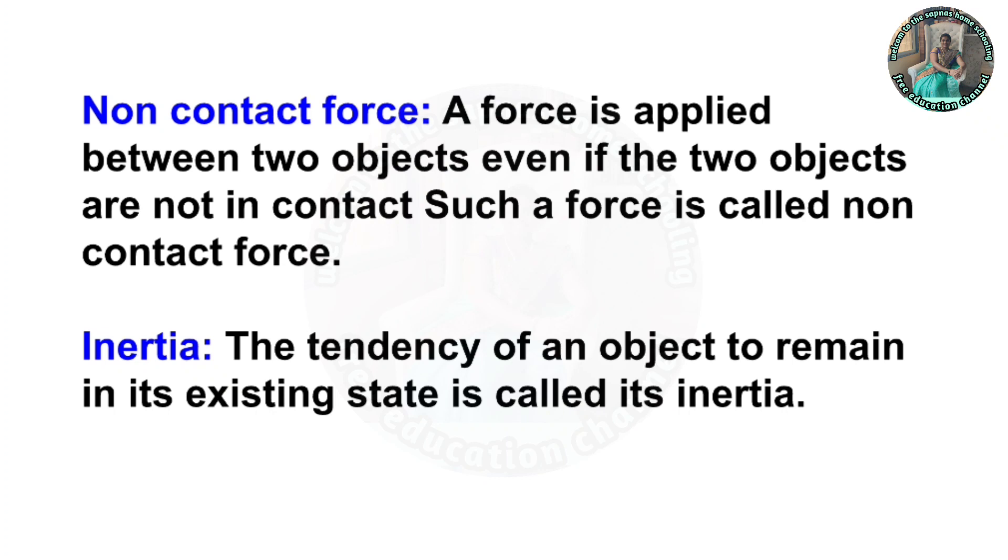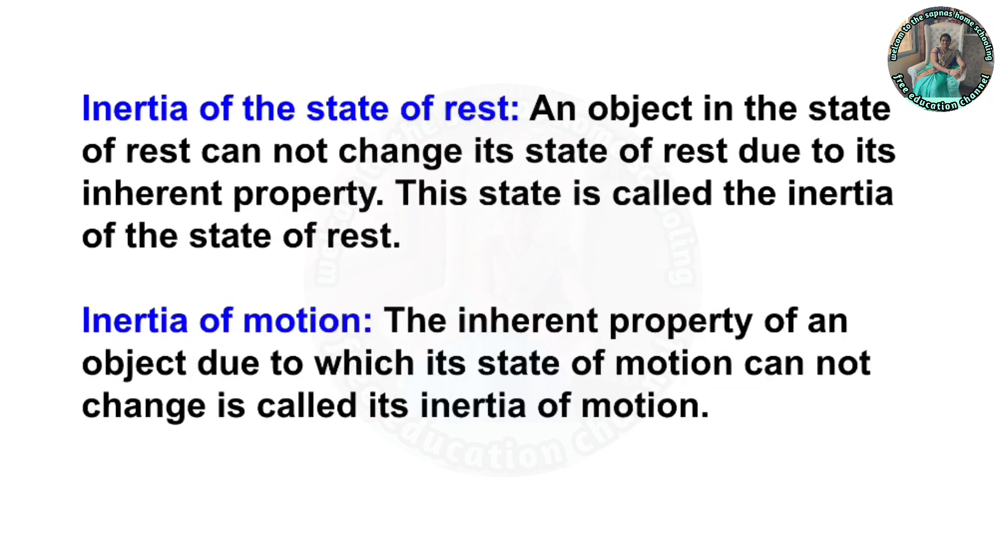Inertia of the state of rest: an object in the state of rest cannot change its state of rest due to its inherent property. This state is called the inertia of the state of rest. Inertia of motion: the inherent property of an object due to which its state of motion cannot change. It's called its inertia of motion.